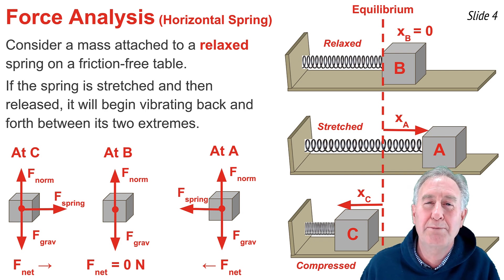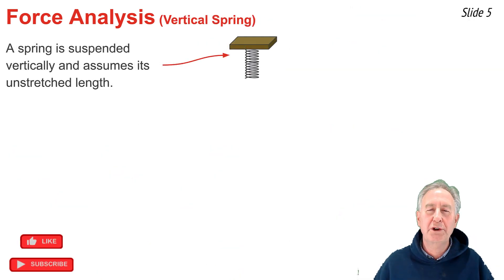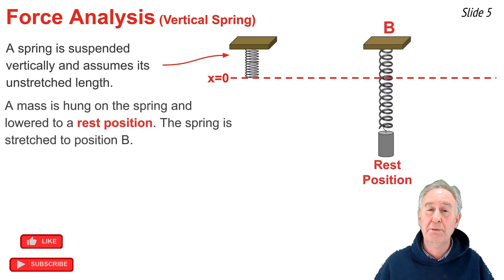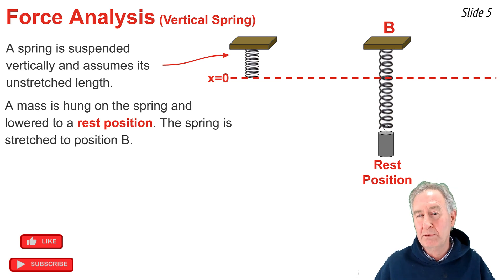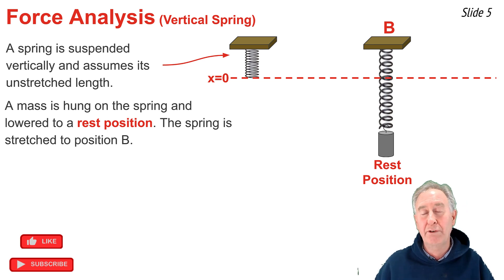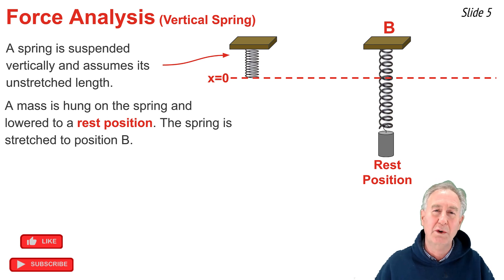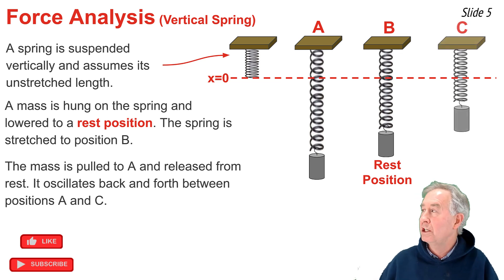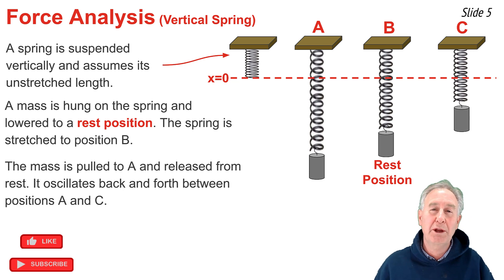Now let's consider a vertical spring in its relaxed, unstretched state — this is the x = 0 location. If we hang a mass on the end and slowly lower it to its rest position, at position B the upward force of the spring on the mass balances the downward force of gravity — we call this the equilibrium position. Unlike the horizontal case, for a vertical spring the equilibrium position has some stretch in the spring. If we pull the mass down to position A and release it from rest, it would vibrate back and forth between extremes A and C about equilibrium position B.